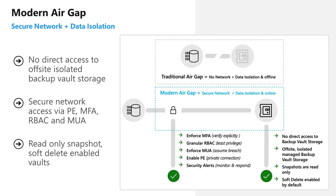We also have modern air gap. Traditionally, air gap solutions have no network connectivity and data is completely isolated and offline. With recovery services vault, we leverage modern air gap capabilities — a secure network connection with data that is isolated yet online. We enforce MFA (multi-factor authentication), provide granular RBAC capabilities, MUA (multi-user authorization), and private endpoints for transferring backups from the source data source to the recovery services vault. On top of that, we provide security alerts to monitor all of this.